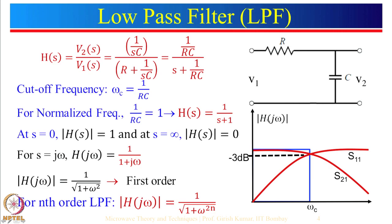Let us start with a simple low pass filter — the RC circuit, which is a first order low pass filter, also known as an integrator. The transfer function H(s) is given by V2(s)/V1(s), which is the output voltage divided by input voltage in the s-domain. We can find the voltage ratio as the impedance of the capacitor, 1/(sC), divided by the total impedance 1/(sC) + R.